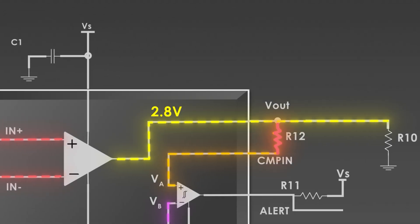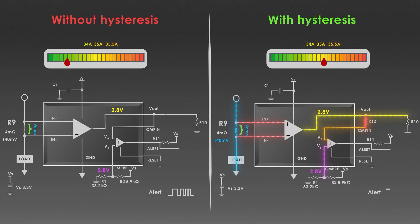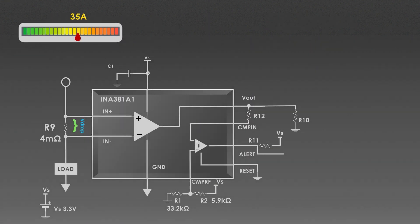R12 feeds back a portion of the alert signal to the comparator input. When an overcurrent condition occurs, the alert pin goes low, pulling the comparator pin slightly lower, which increases the threshold voltage required to reset the alert. This means the current must fall lower than the original threshold before the alert turns off.